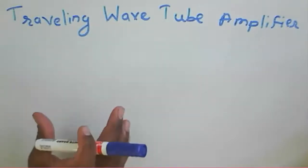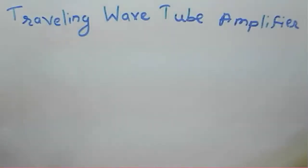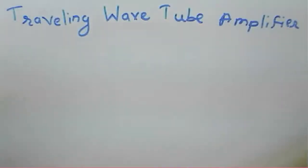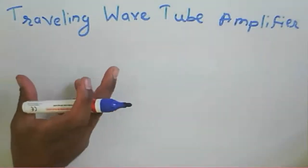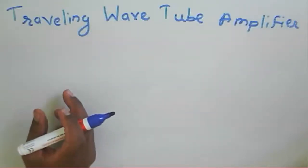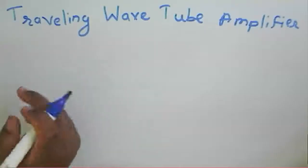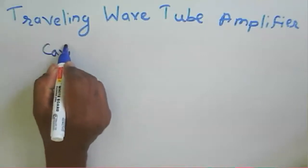In the traveling wave tube amplifier, a helix type structure, or slow wave structure, is used to amplify the signal instead of a cavity. These slow wave structures look like a helix and there are various types. Each slow wave structure has its own resonant frequency, depending upon the inductance and capacitance of the slow wave structure. To maintain oscillation inside a slow wave structure, we need to consider what type of slow wave structure is to be used.